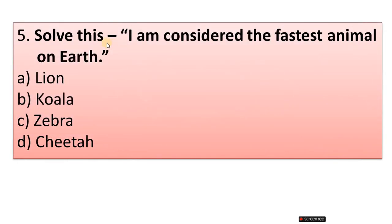Question 5: Solve this. I am considered the fastest animal on earth. A. Lion, B. Cheetah, C. Zebra, D. Cheetah. Correct answer is option B, Cheetah.